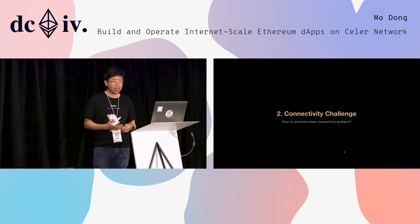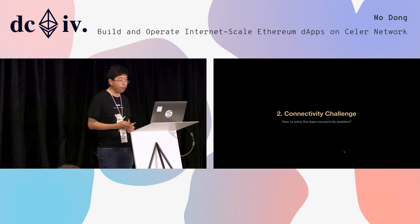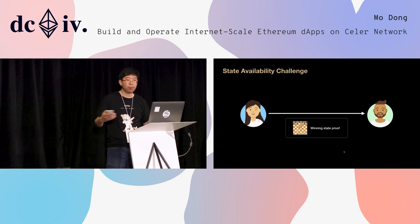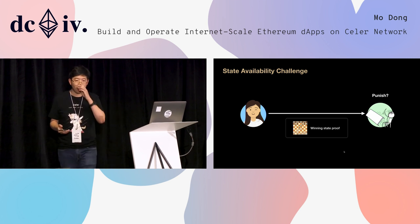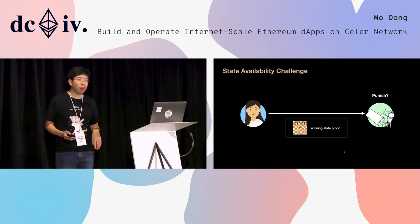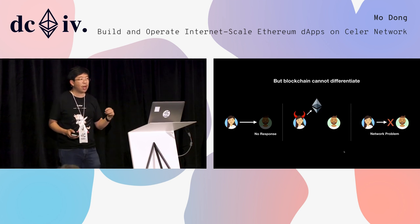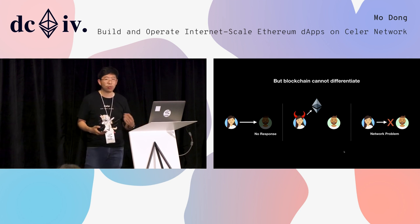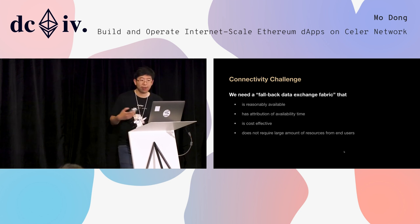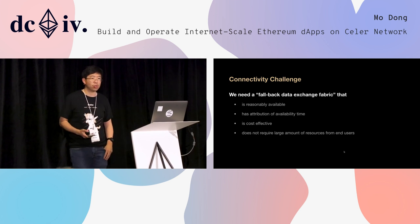This is how we solve the state availability challenge using a sidechain construct. The second challenge is called the state connectivity challenge. Alice and Bob are playing a board game on a state channel. Alice made the winning move and sent the proof to Bob, but Bob is refusing to sign it and ragequit. Should Alice just submit this state to the main chain and try to punish Bob? No, because the blockchain cannot differentiate between three scenarios: Bob rage-quitting, Alice maliciously submitting a state, or a simple network problem between them. We need a fallback data exchange fabric that is reasonably available, has attribution of state availability time, is cost effective, and doesn't require large resources from end users.